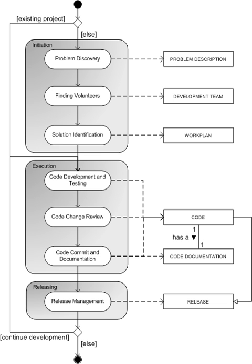A memory leak tool or memory debugger is a programming tool for finding memory leaks and buffer overflows. A memory leak is a particular kind of unnecessary memory consumption by a computer program, where the program fails to release memory that is no longer needed. Examples of memory leak detection tools used by Mozilla are the XPCOM memory leak tools. Validation tools are used to check if pieces of code conform to the specified syntax; an example is Splint.